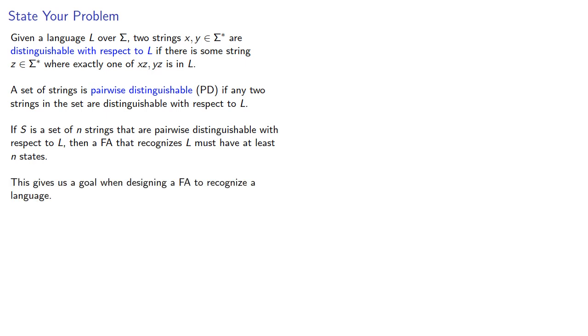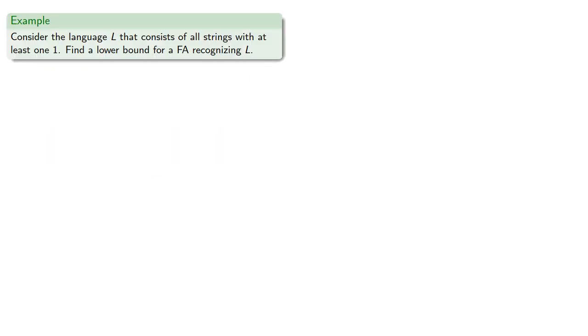This gives us a goal when designing a finite automaton to recognize a language. For example, let's consider the language that consists of all strings with at least one 1. Let's find a lower bound for a finite automaton recognizing L.